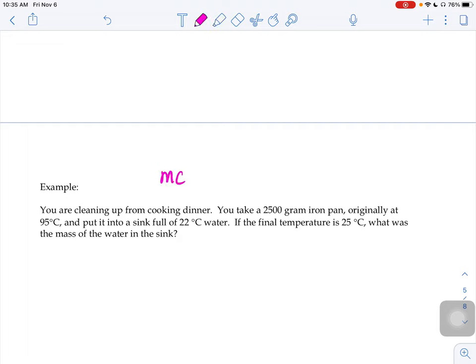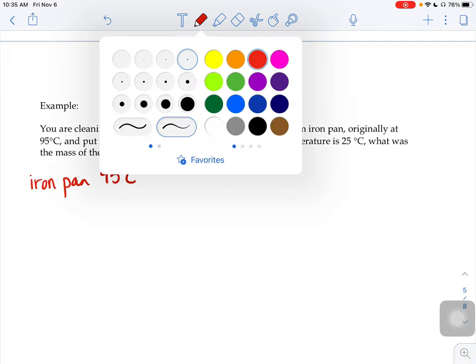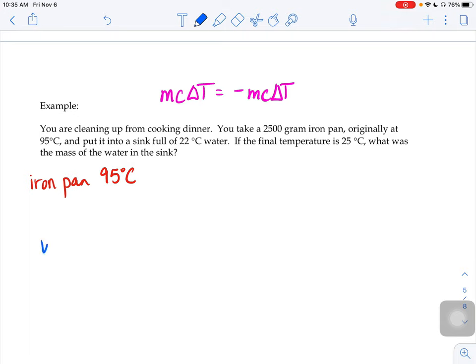So again, our equation's going to be MC∆T equals negative MC∆T. So our pan is our hot object out of these two. It's starting at 95 degrees. So I'm just going to write that here. Our iron pan is at 95. And then our water in this problem is relatively cool because the water starts at 22.